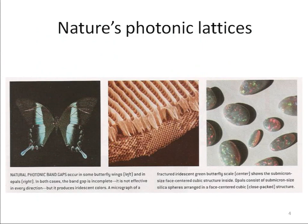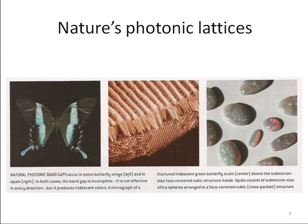Such periodic structures are already present in nature. For example, the color of many living organisms — for example, butterfly wings — the color doesn't come from dyes but actually from structures within the wings. Similarly, bird feathers also show what we call structural color. You also have minerals like opals, which are collections of periodic arrays of silica spheres, and they give color.